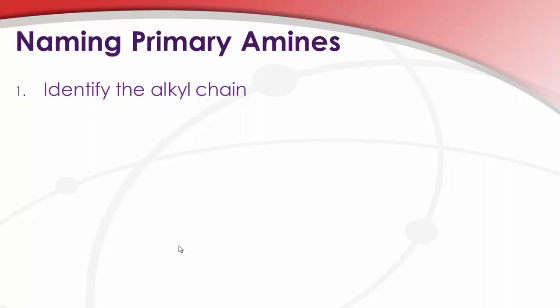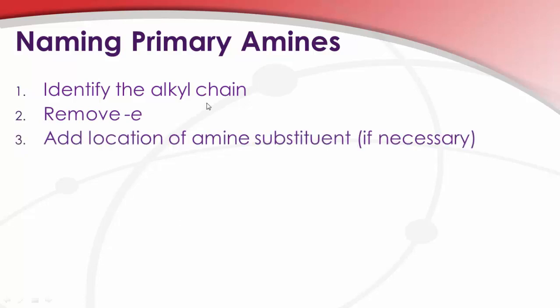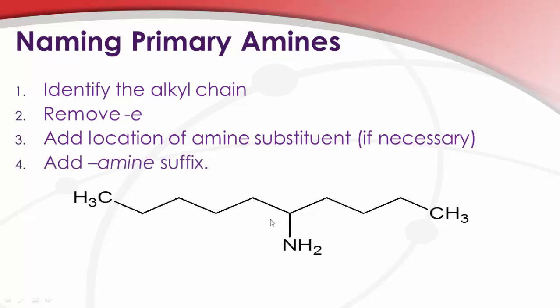So just to make sure we have a step-by-step approach, though, to it, if we want to name primary amines, identify the alkyl chain, remove the e, and add the location of the amine substituent, if needed, before the amine suffix. So 2, 4, 6, 8, 10. So this would be decane, 1, 2, 3, 4, 5. So this would be decan-5-amine.